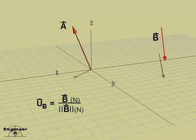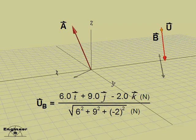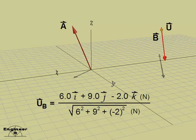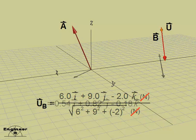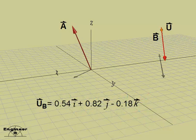First, find the unit vector for the line of action along vector B. The units cancel, and we have the unit vector.